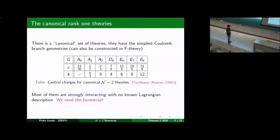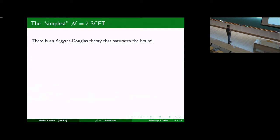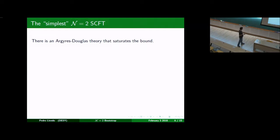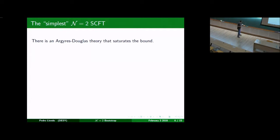What's the name of this theory? It doesn't have a standard name. I'm going to call it the simplest N equals two theory. It belongs to a family of theories called Argyres-Douglas theories. I'm going to call it the simplest Argyres-Douglas theory, the simplest N equals two SCFT. This is the theory I wanted to introduce to you. It is an N equals two fixed point with many nice features.